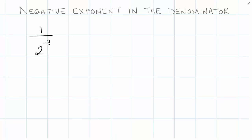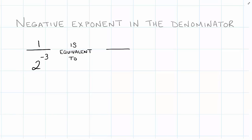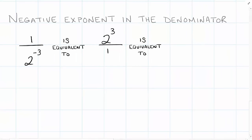Now let's go to the next level. What happens when we see a negative exponent and it's already a fraction? I've got one as my numerator and underneath I've got two to the negative third power. It's already a fraction, and I want to get rid of the negative exponent. Let's take the reciprocal again. I know that one over two to the negative third is equivalent to two to the third power over one.